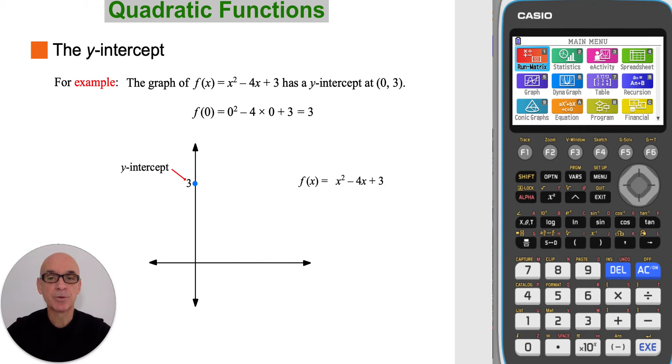In the example shown, the function given has a y-intercept at 0 comma 3. This is because f of 0 is equal to 3, and also because the value of c is equal to 3.